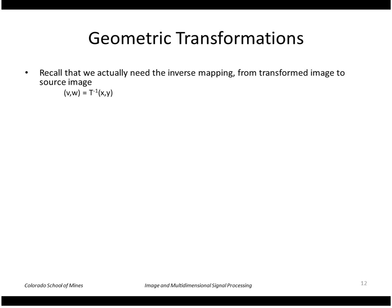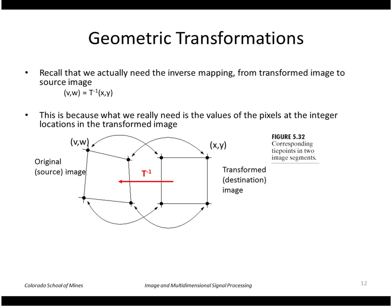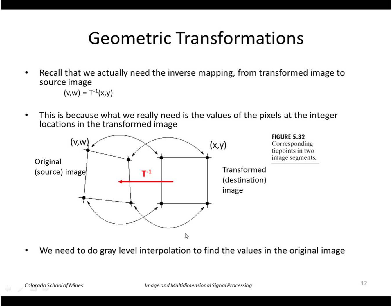We actually want the inverse transform, so we simply take the inverse of the matrix. Then, once we apply our transform to find the new coordinates, we go ahead and do gray level interpolation — such as bilinear or bicubic.